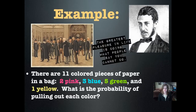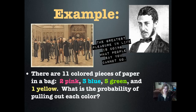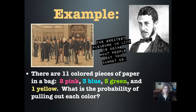Here's an example. There are 11 colored pieces of paper in a bag: two pink, three blue, five green, and one yellow. What is the probability of pulling out each color? We're going to write the probability of pulling out each color as fractions, and also use the terms we discussed to describe the probability.